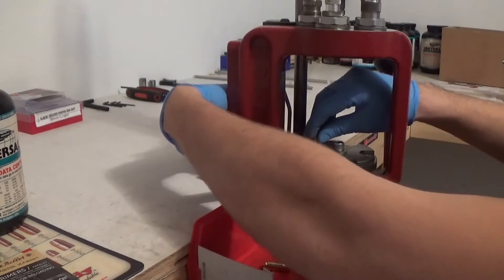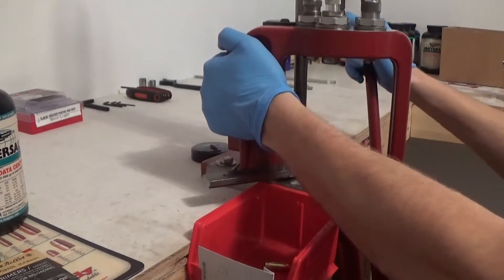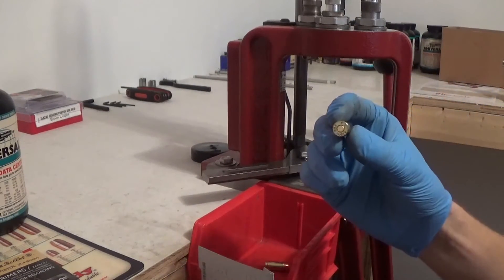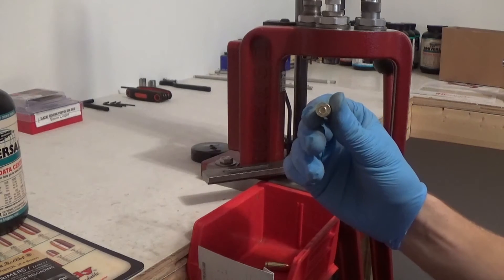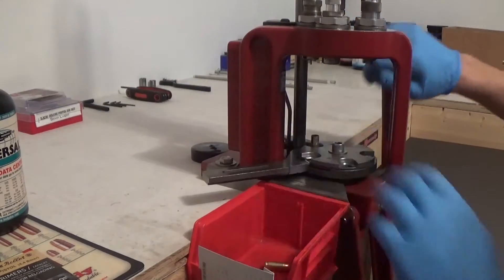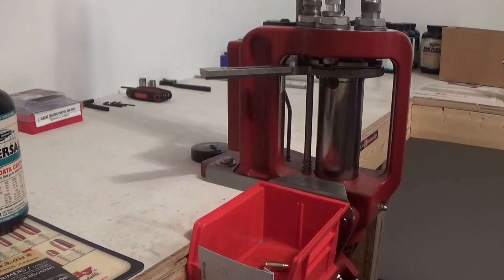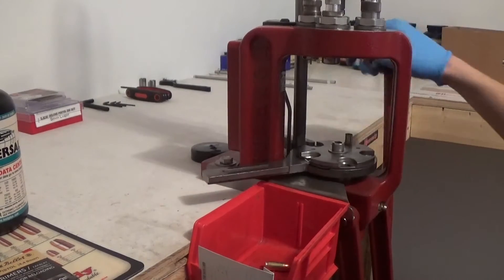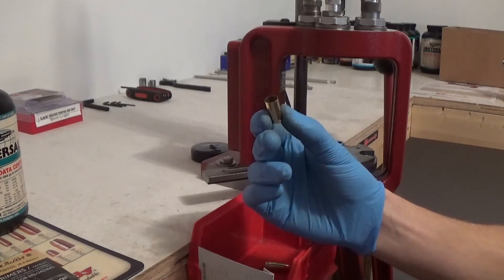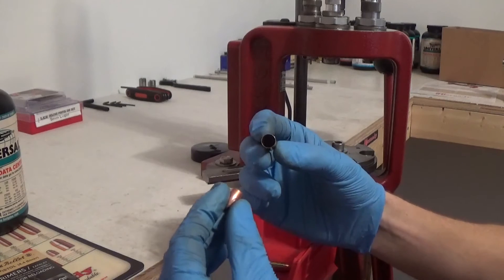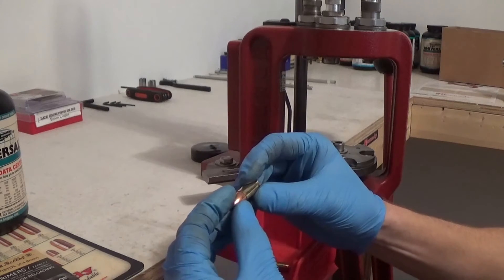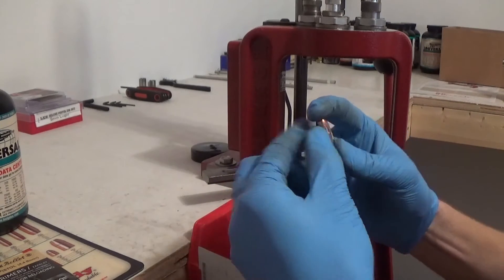After you got your new primer set up, get the expander ball. Now I've tried to show the camera this before and it didn't work so great, but now that it's expanded, the reason you use that expander ball is so it will allow the bullet to get pressed into the brass, especially with these plated bullets like this right here.